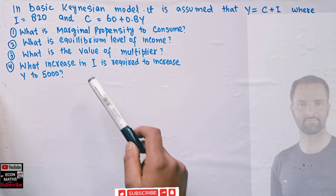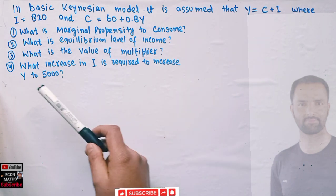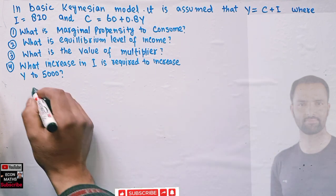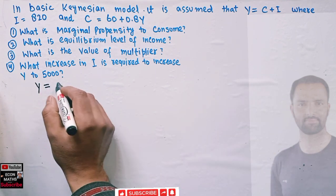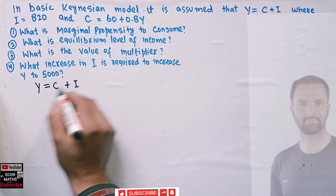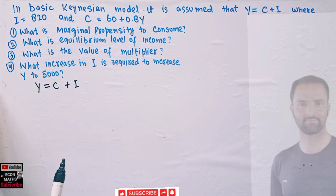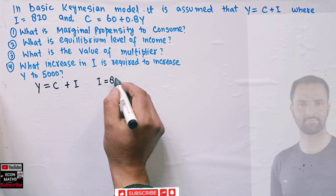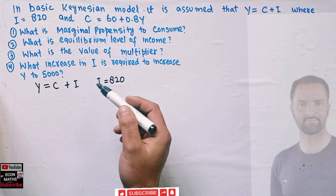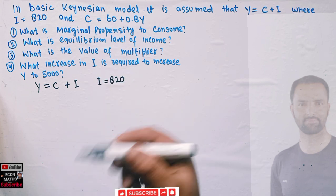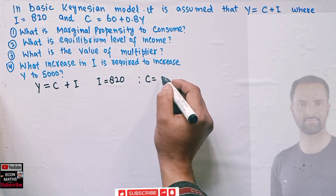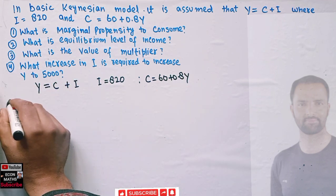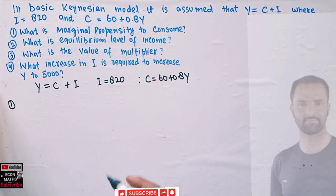We also have to find what increase in investment is required to increase income to five thousand. So what we are given: Y = C + I, where Y is income, C is consumption expenditure, and I is investment expenditure. The value of I is 820 — this is our autonomous investment, investment that does not depend upon the level of interest rate. Our consumption function is C = 60 + 0.8Y.